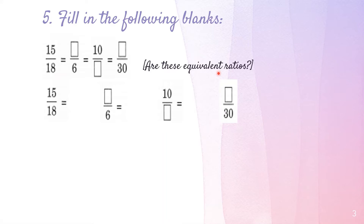One important thing to note: if the fractions are equivalent, then the ratios are also equivalent. We know that ratios can be written in fraction form as well. Now let's begin solving. We have 15 upon 18 and we need to find the common factors of 15 and 18 to reduce it.